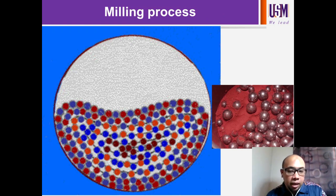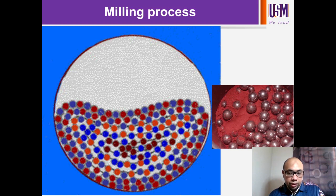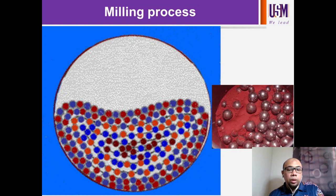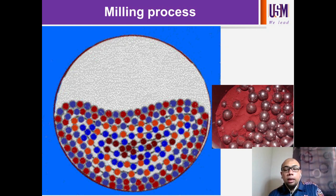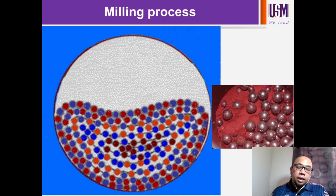I use animation in order to simplify the process occurring in the ball milling machine. As you can see in this slide, when you rotate the ball milling machine or the tumbler, the ball milling media will also rotate together in the same direction as the rotation of the tumbler. The ball milling media will reach a certain height before falling back to the original position, and this process continues repeatedly according to the milling time you set.